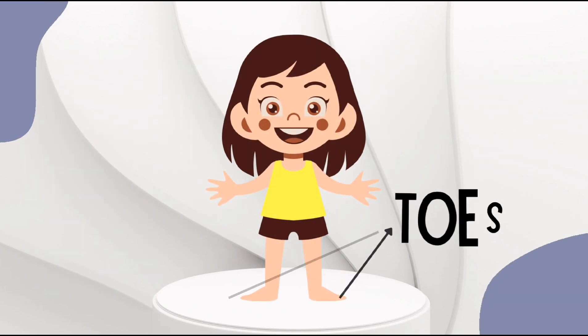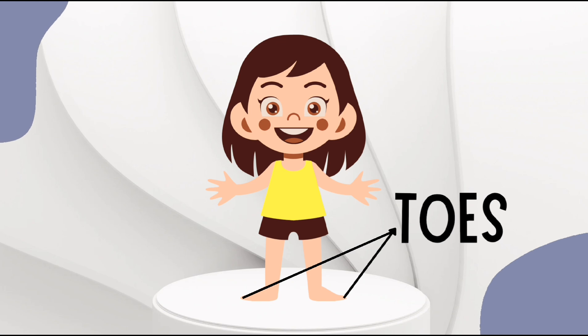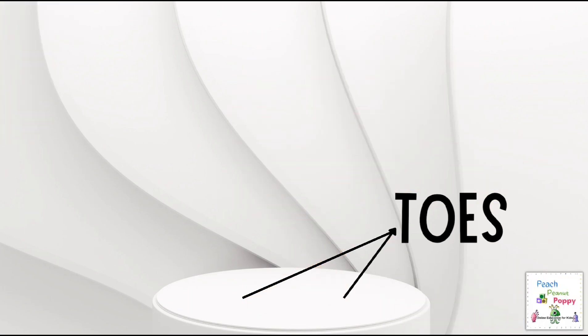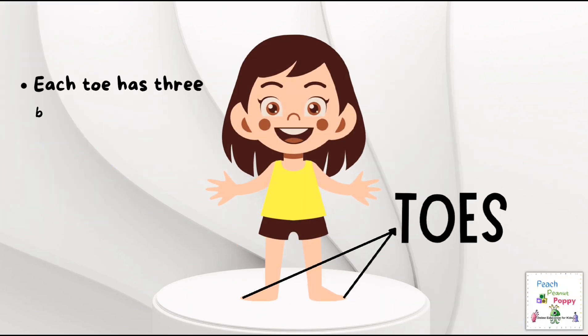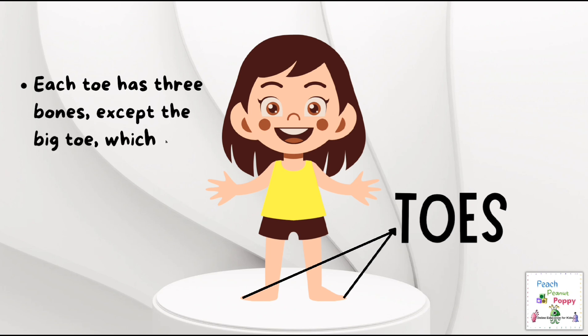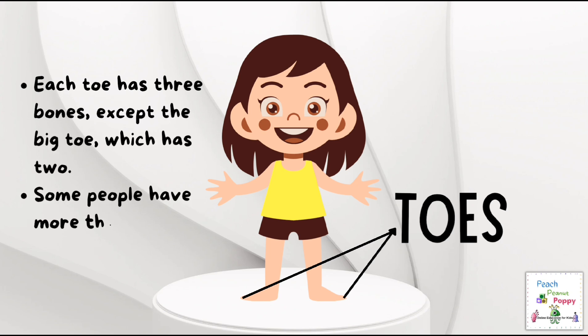Next up are the toes. Each toe has 3 bones except the big toe which has 2. Some people have more than 5 toes on each foot.